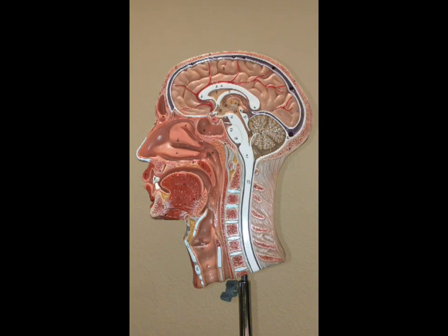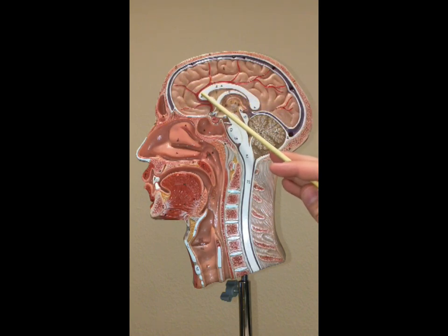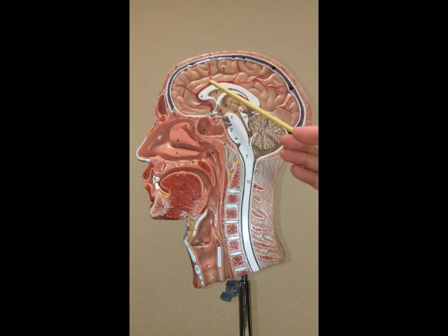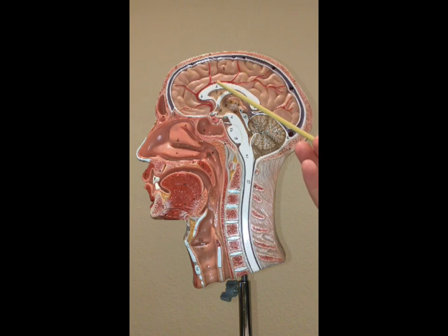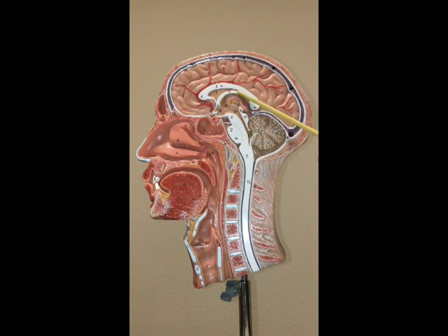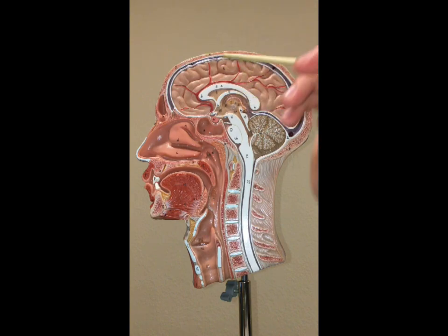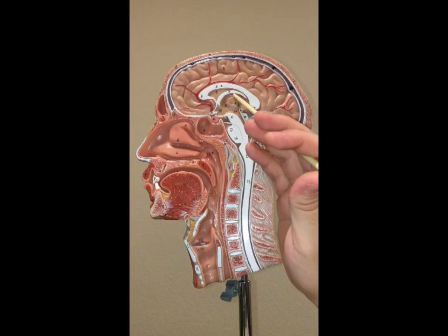Here we have the cerebrum, which is very large and well-developed in humans. Below that is the corpus callosum — all of this region is the corpus callosum — which is the connection or bridge between the two hemispheres of the brain. Below that is the septum pellucidum, shaped like a figure eight, and below that is the fornix, which is part of the hippocampus where its axons are leaving.